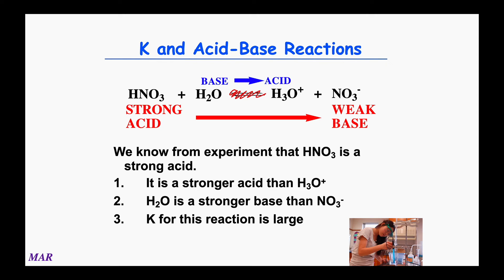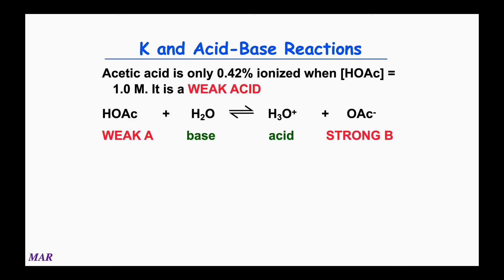All strong acids and strong bases are 100% on the product side — they can't compete. What we're seeing is how to predict reactions: the strong acid pushes to the weak acid, the stronger base pushes towards the weaker base. For a weak acid, though, we have to be more careful. We saw that acetic acid Ka = 1.8 × 10⁻⁵ — less than one — meaning it's very reactant-favored.